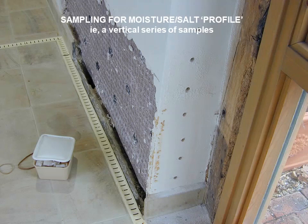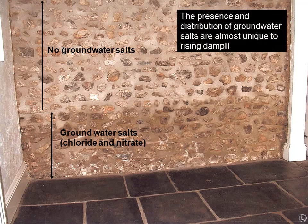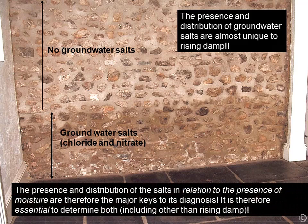If we take this to a practical level we can sample for moisture and also make a salt profile. This is done by a vertical series of samples on which we do total, free, and hygroscopic moisture. For a wall where the bottom is damp and the top is not visibly damp: if it's rising damp, the groundwater salts will be present as well as moisture if active. The presence and distribution of groundwater salts are almost unique to rising damp, and the presence of those salts in relation to moisture are the major keys to diagnosis — we really need to determine both.